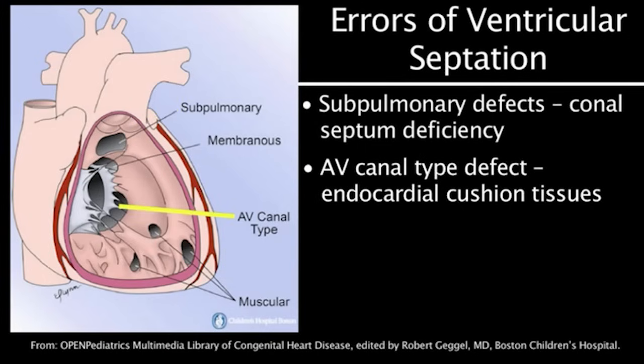Atrioventricular canal type defects are caused by defects in the endocardial cushion tissues of the intraventricular septum.